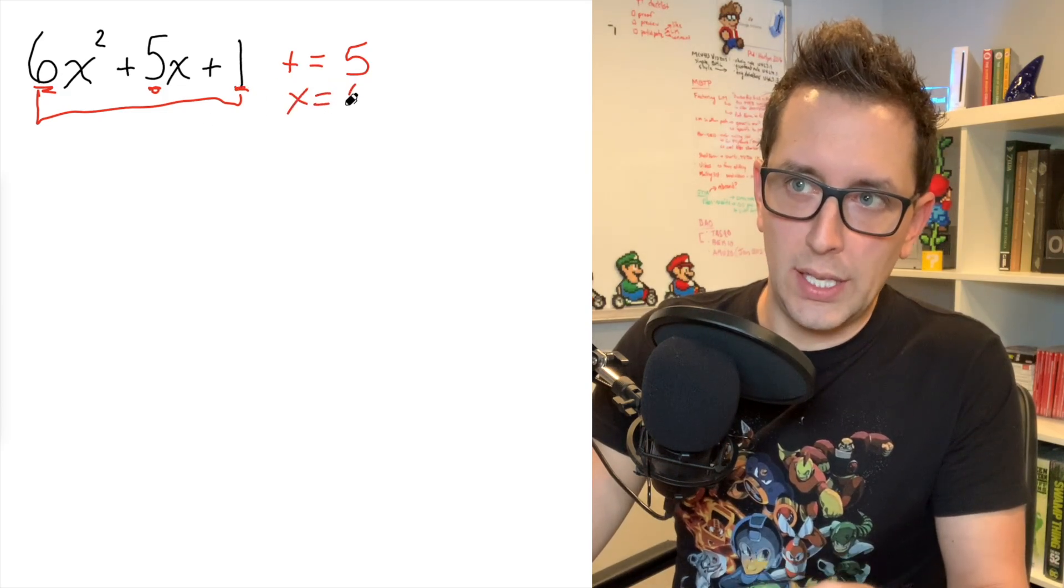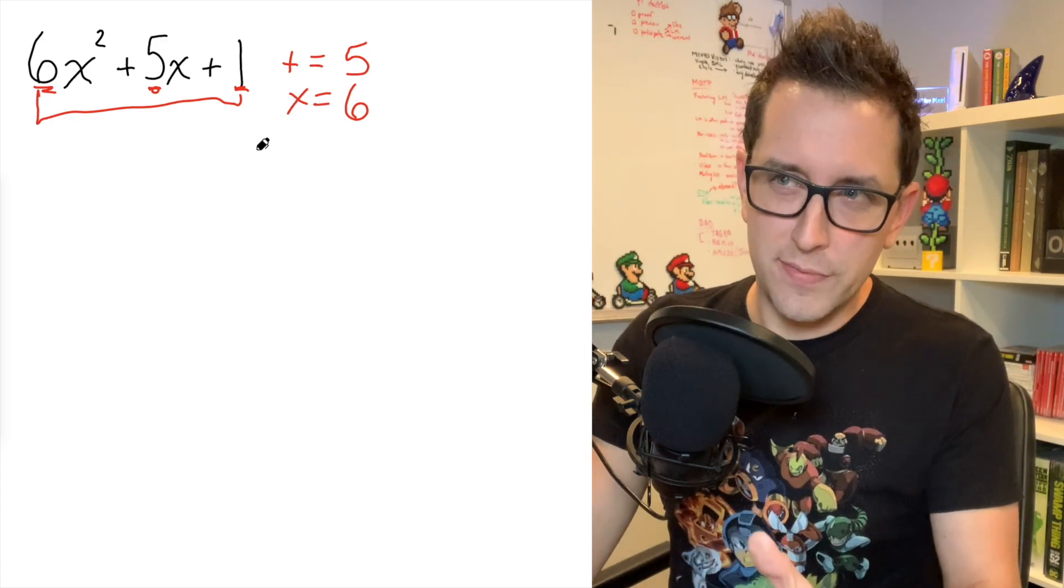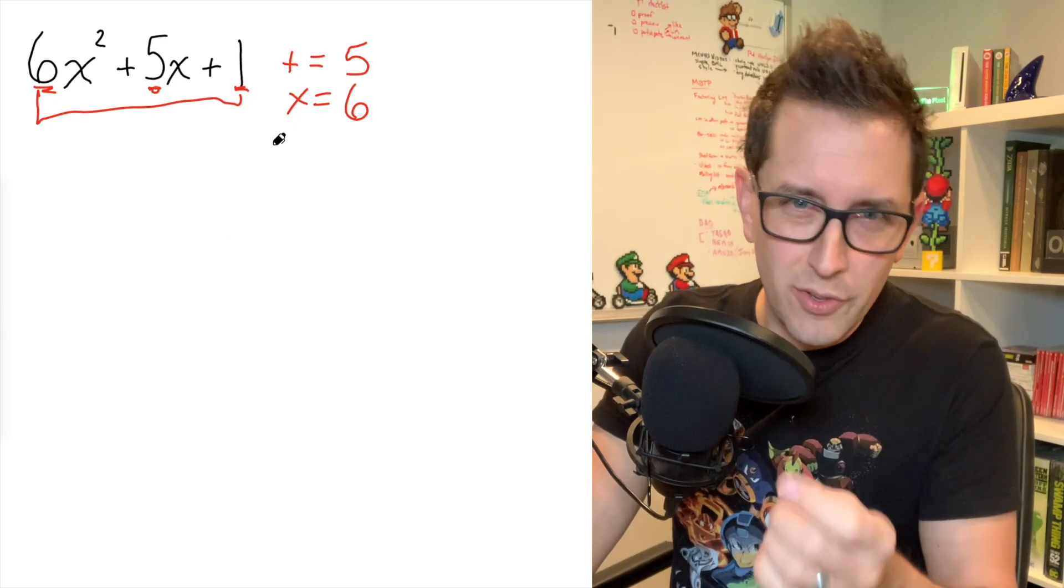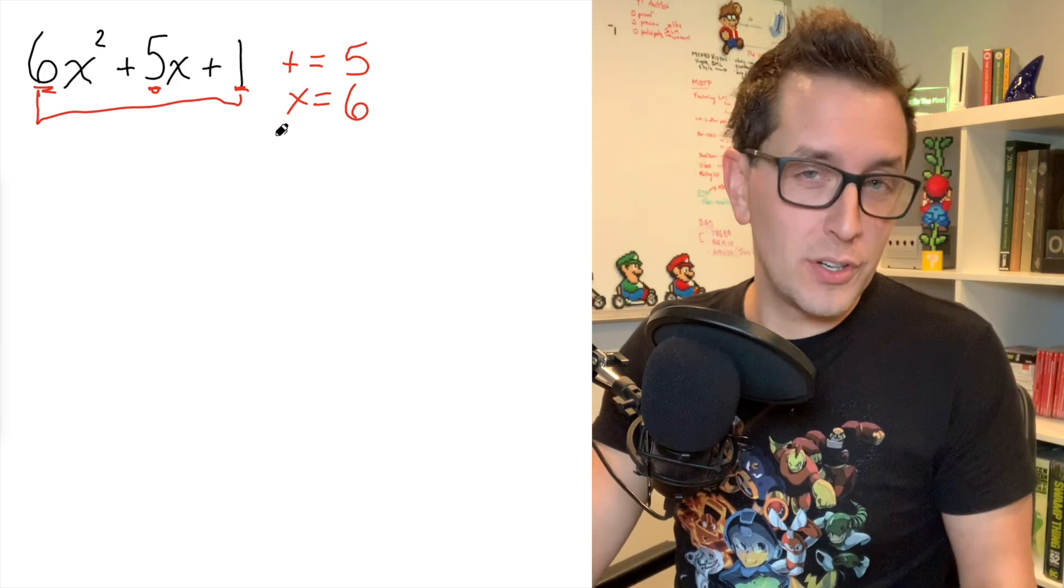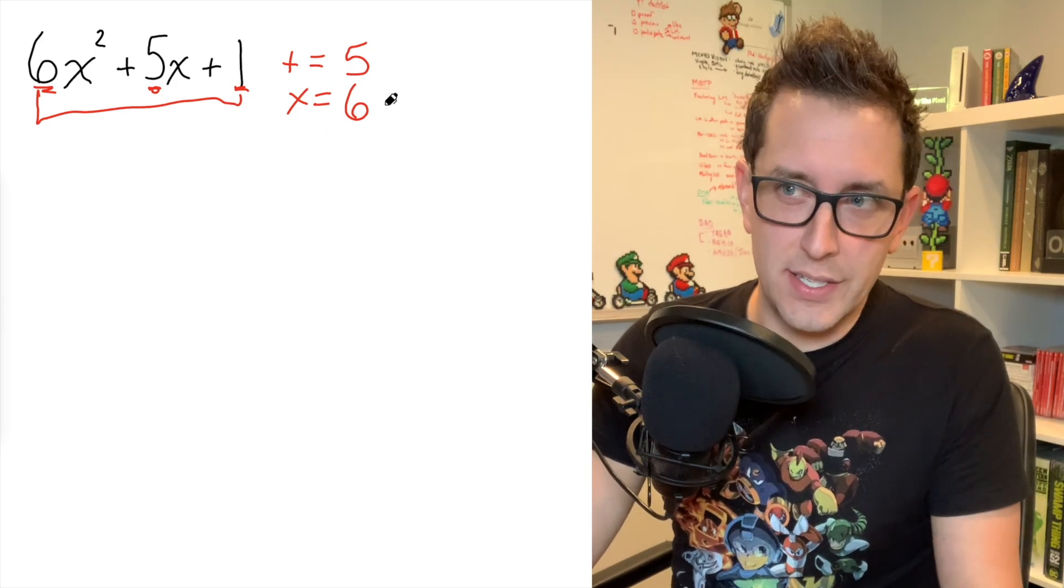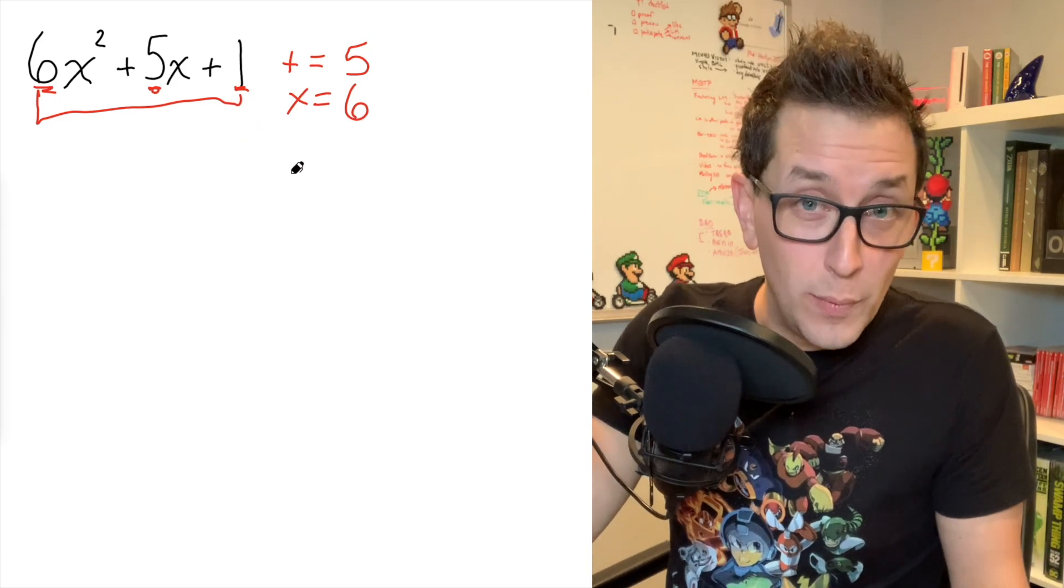So I'm looking for two numbers that multiply to get 6 while also adding to get 5. And like I said, most factoring strategies, regardless of which one you're using, are going to use something similar to this. And so this is usually the hardest part of factoring for people is coming up with these two numbers. One of the things I like to do to make it simpler is I like to start with the multiplication first.